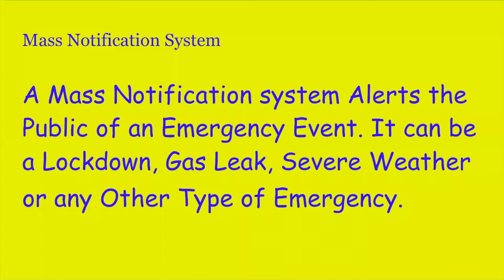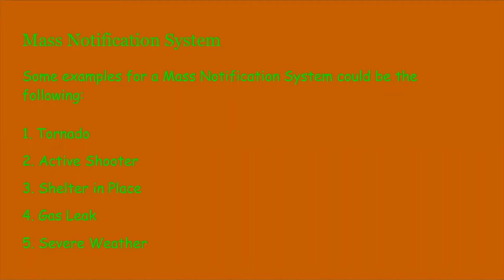It can be a lockdown, gas leak, severe weather, or any other type of emergency. Some examples for a mass notification system could be the following: a tornado, active shooter, shelter in place, gas leak, severe weather. There can be a number of reasons why you may have a mass notification system.